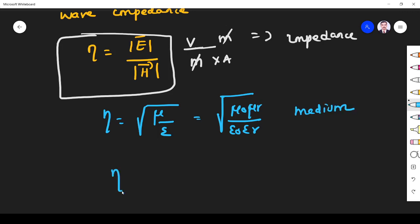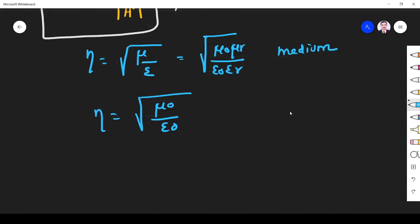In free space, mu r equals one and epsilon r equals one, so it becomes mu naught by epsilon naught. We know mu naught, the absolute permeability, is four pi times 10 to the power minus seven henry per meter. Epsilon naught is 8.854 times 10 to the power minus 12 farad per meter.